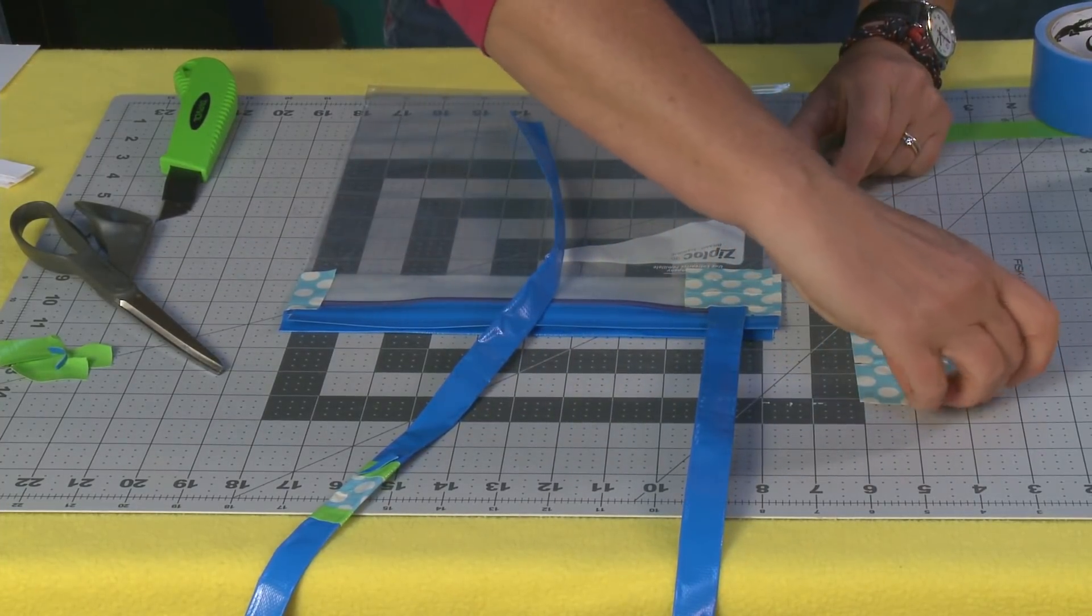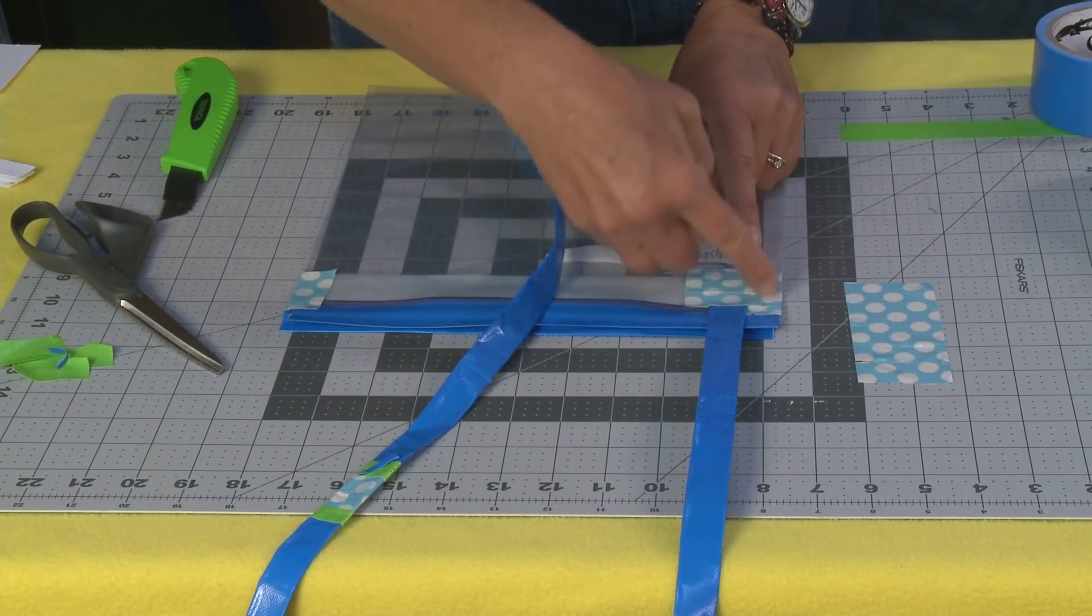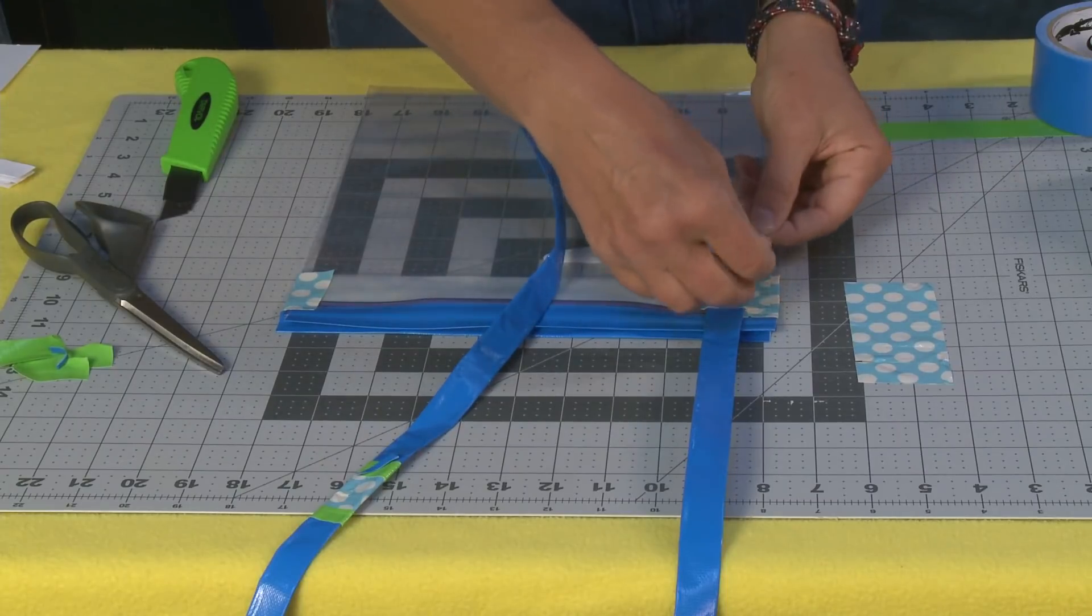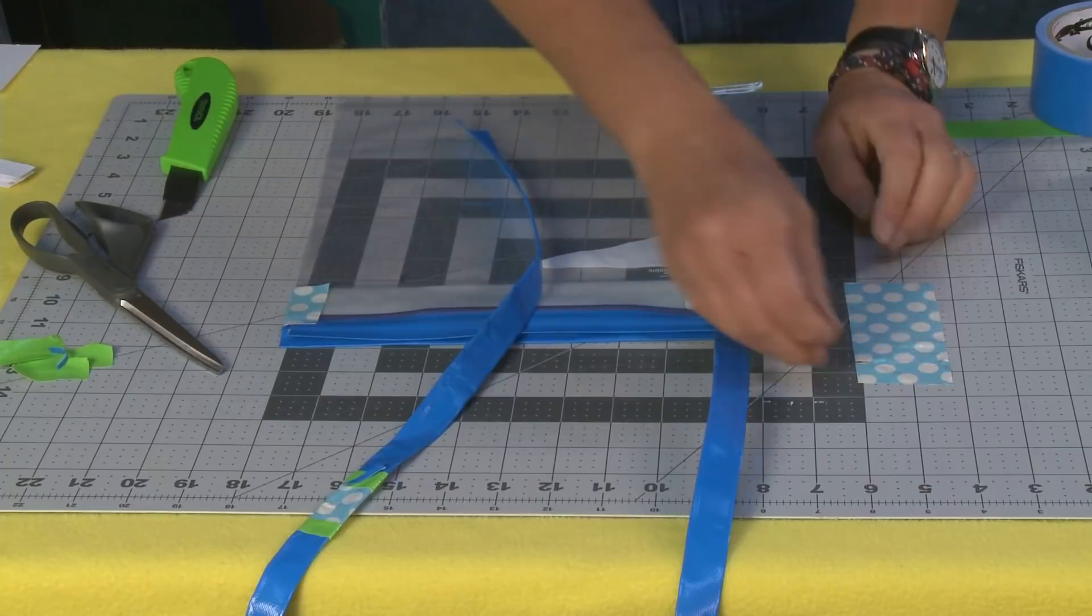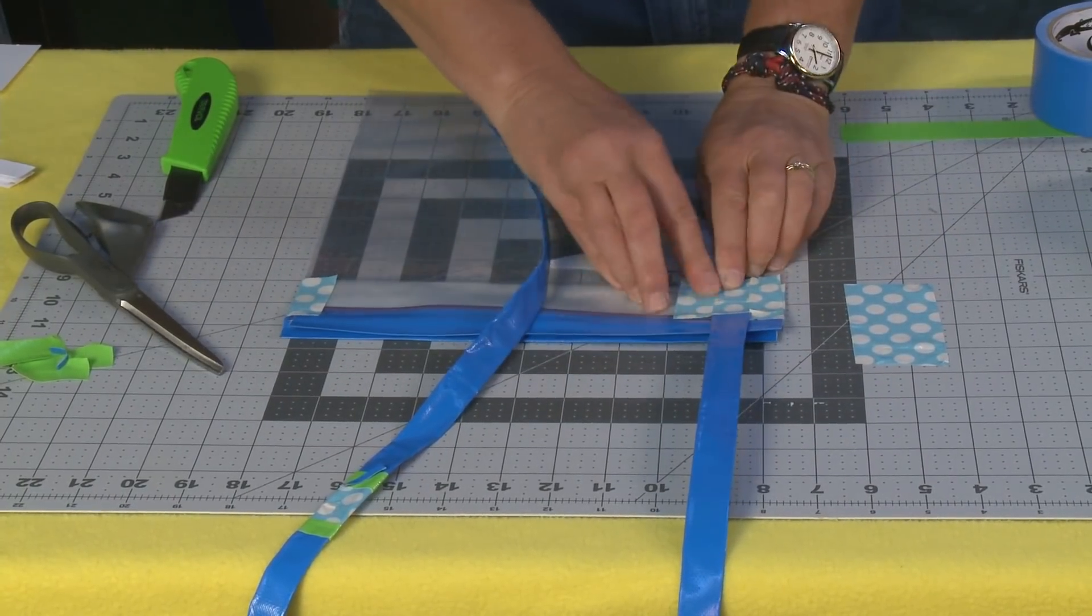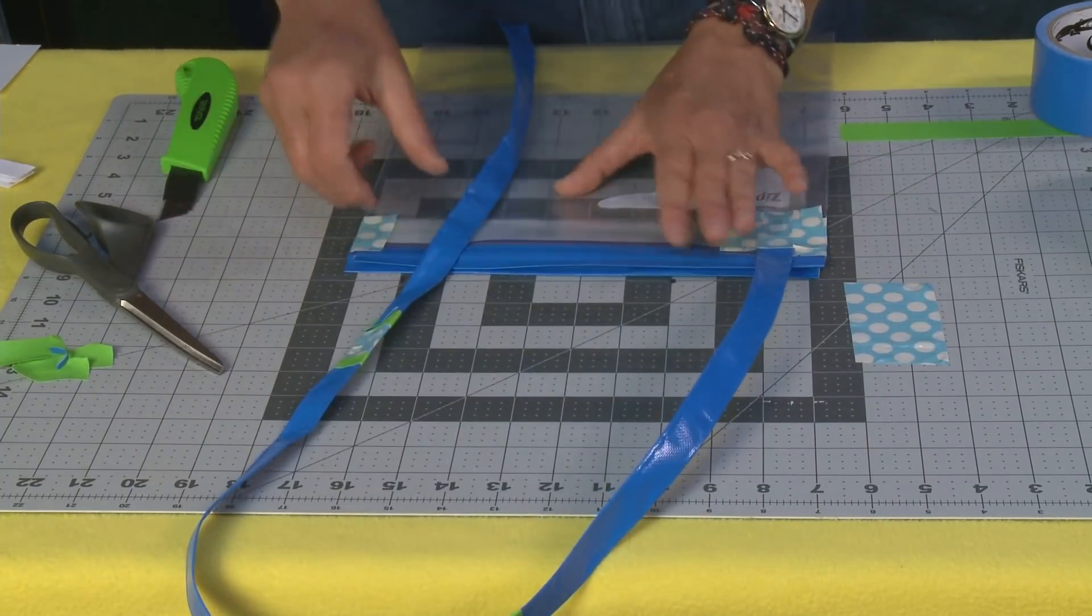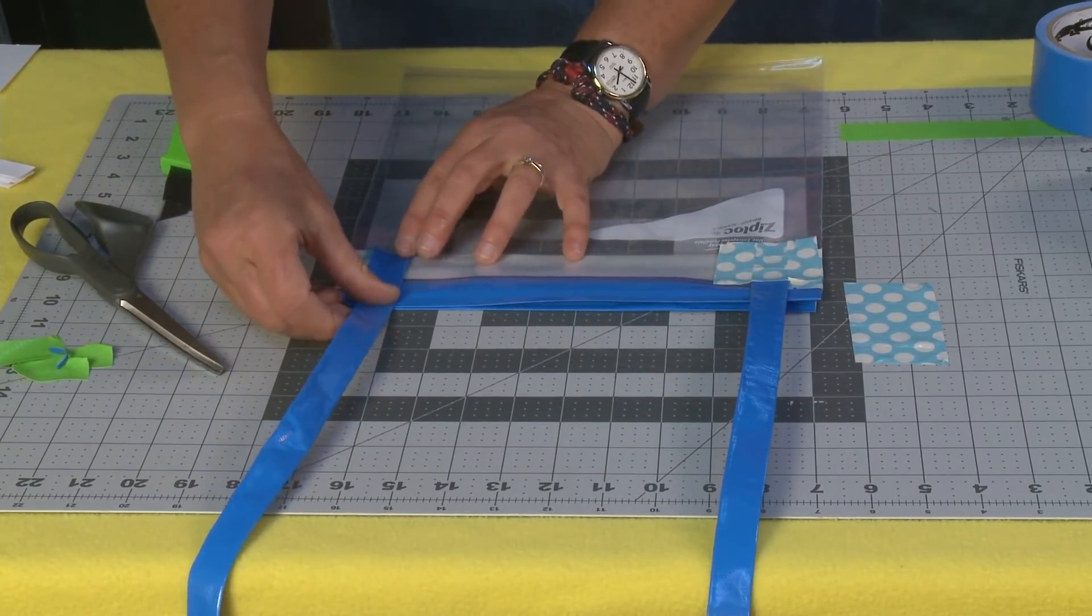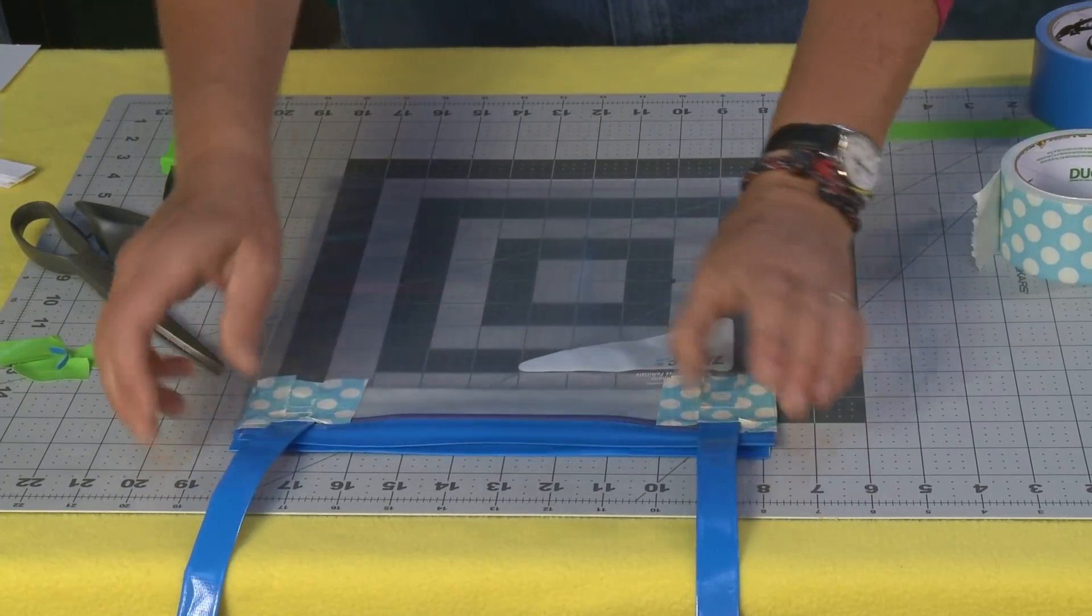But now what you're going to do is come back with another piece and you're going to go up and down. So you're going to go parallel and you're going to seal off those pieces that you just put down. Now once again this is a point where you want to just check and make sure that your strap is not twisted and then you want to lay down the second strap side. There you can see both straps are sealed in place.